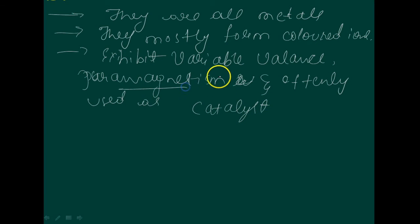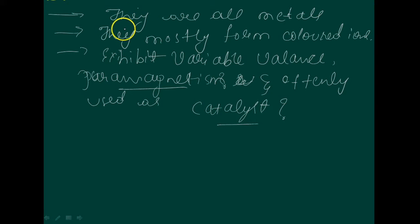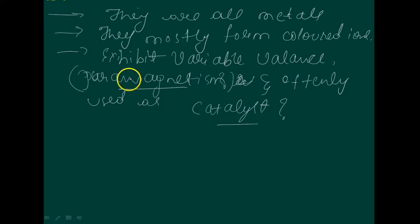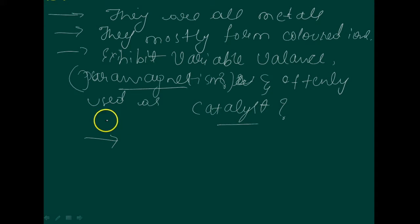Paramagnetism is a form of magnetism where certain materials are attracted by an externally applied magnetic field. They form an internal induced magnetic field in the direction of the applied magnetic field — that is called paramagnetism.